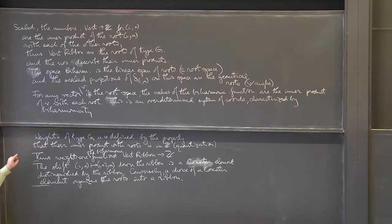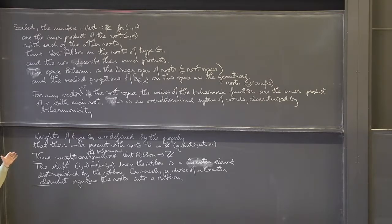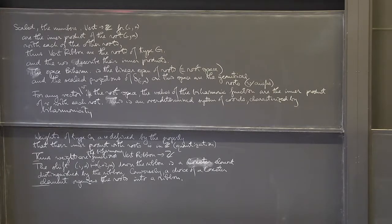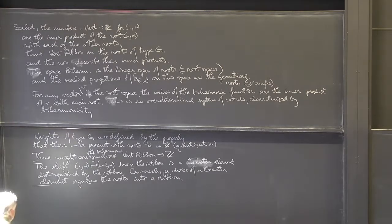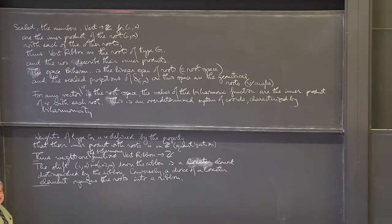They have to be scaled to become integers — scaled by the Coxeter number. You get one over the Coxeter number times the projection. The projection of one will have norm smaller than one, but after you scale it, it becomes integers. We'll discuss this on very simple examples.